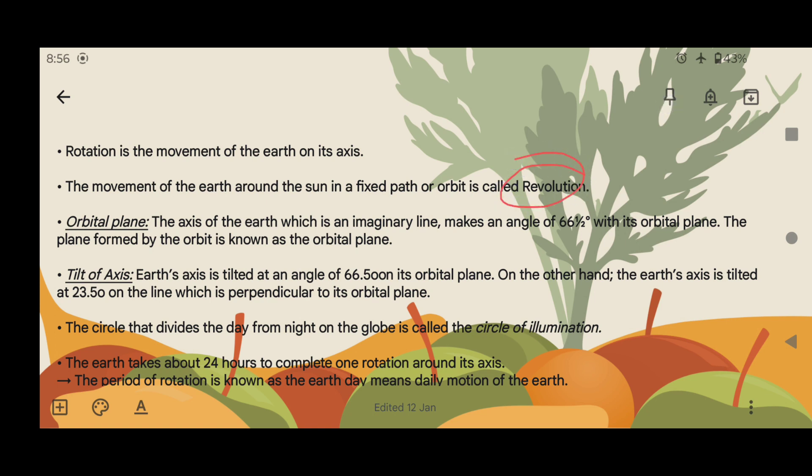Orbital plane: The axis of the Earth, which is an imaginary line, makes an angle of 66.5 degrees with its orbital plane. The plane formed by the orbit is known as orbital plane.